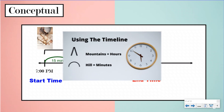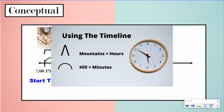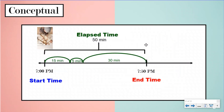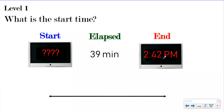On our timeline we use the mountains and hills strategy. Mountains represent an hour — we'll get into that in the next couple of lessons, because today we're sticking with the third grade standard, which is doing it within the hour. The hills represent minutes and can be any amount. On our timeline we showed 15 minutes, 5 minutes, and 30 minutes. You can make hills of one minute, two minutes, 39 minutes — however you want to break apart the elapsed time. If it's minutes, we use hills to show that.